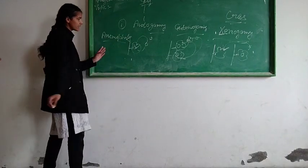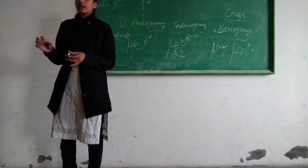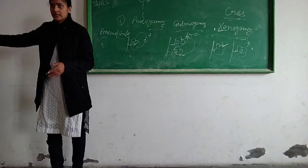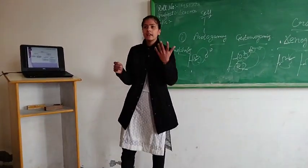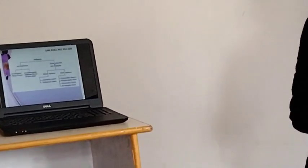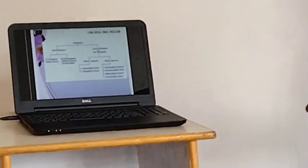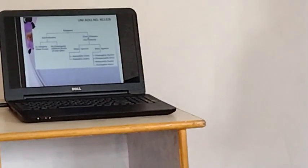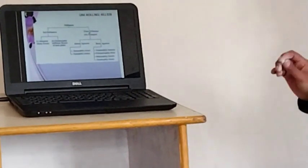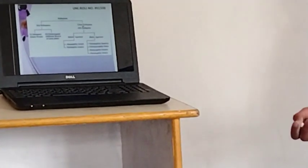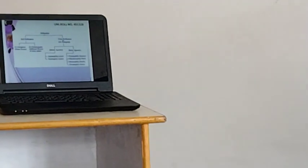Let us see the characteristics and agents of pollination. There are two types of agents: abiotic agents and biotic agents. Abiotic means non-living — wind or water. Biotic means living things. Living things that transfer pollen grains include insects, birds, and snails. Yes, ma'am. Thank you.